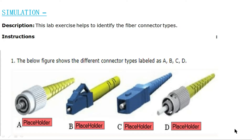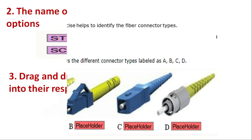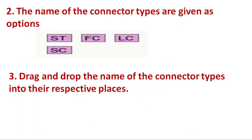Let's check the default options for these connectors. The connector type names given as options are: first, the ST connector; second, the FC fiber connector; third, the LC fiber connector; and fourth, the SC fiber connector. In the actual exam, you have to drag and drop the connector type names into their respective places.